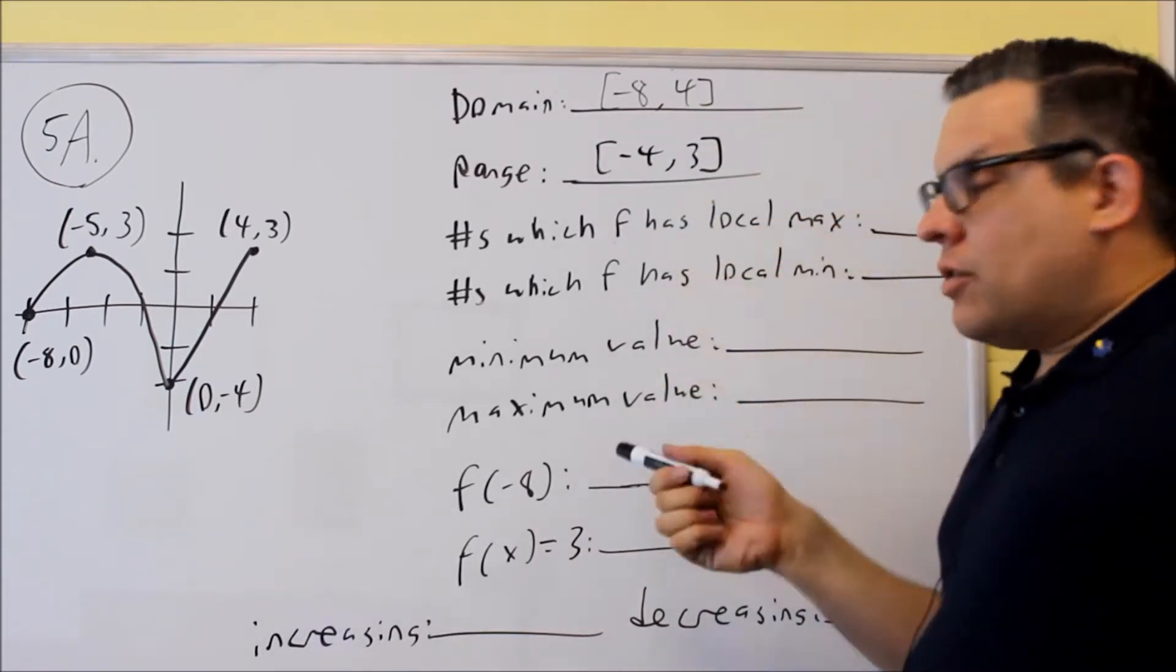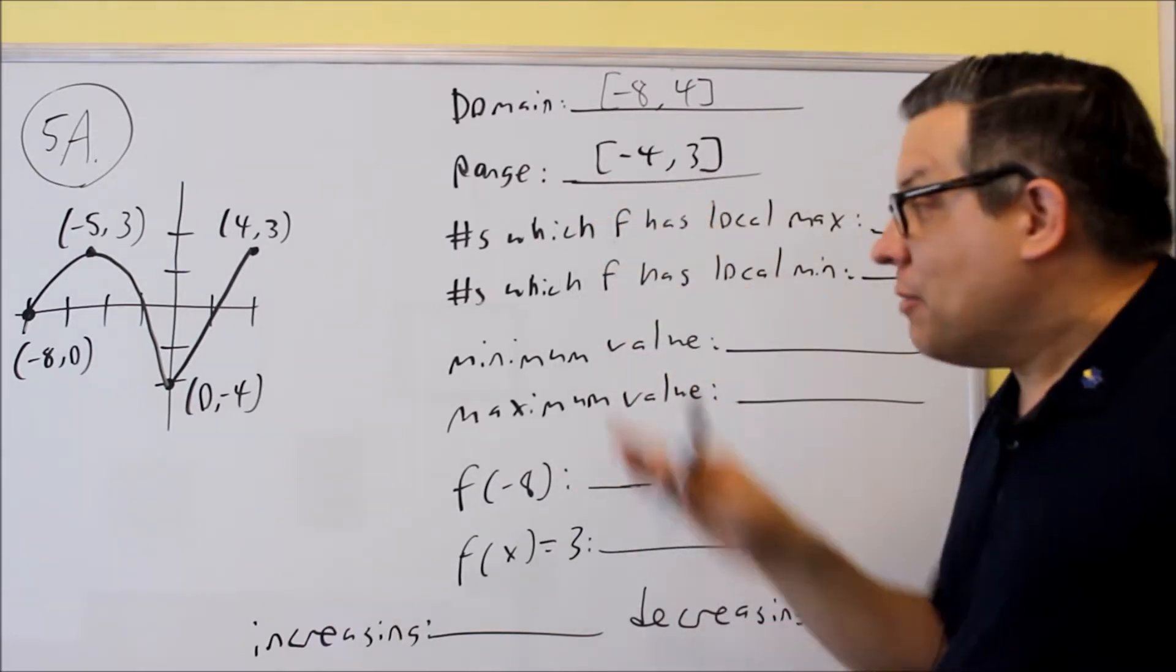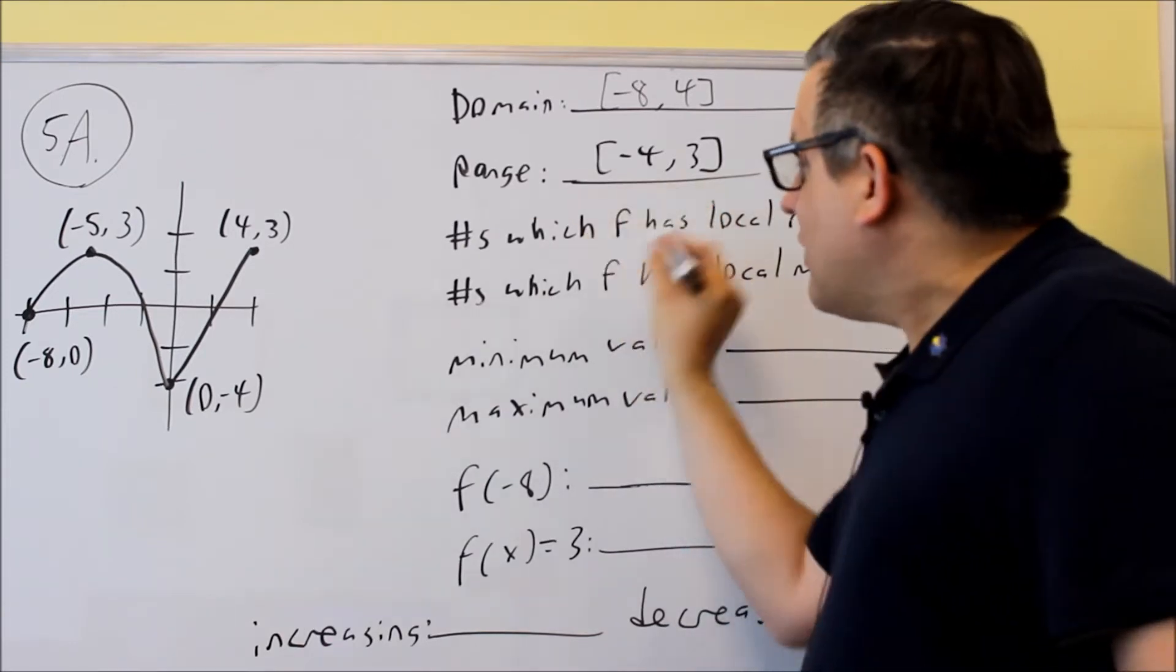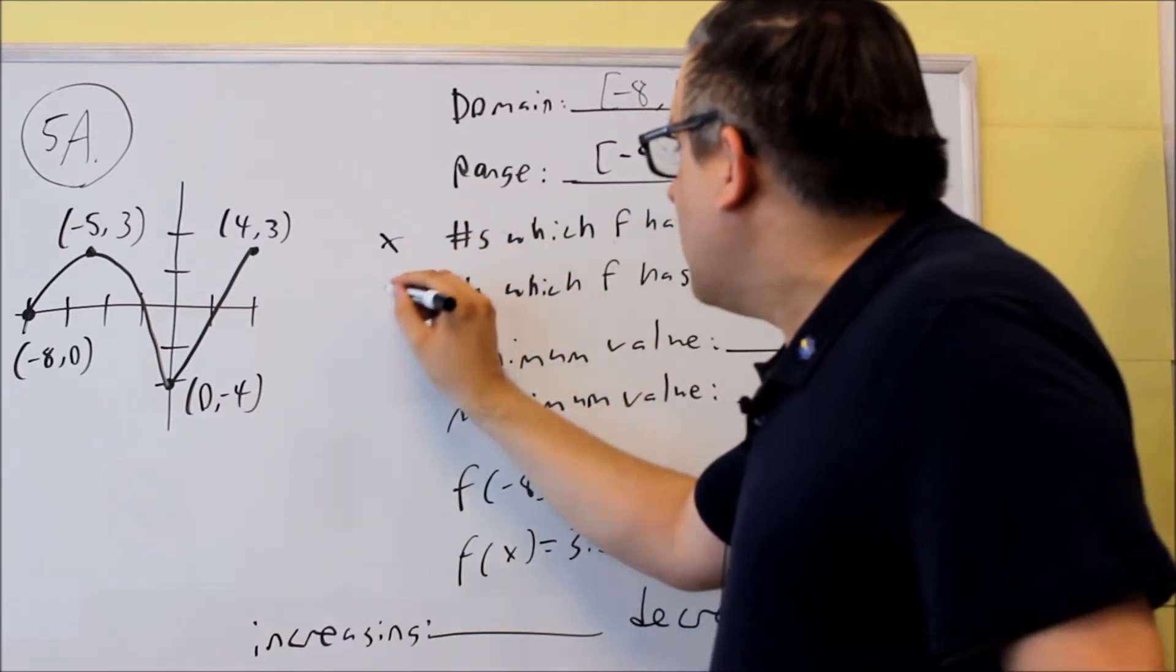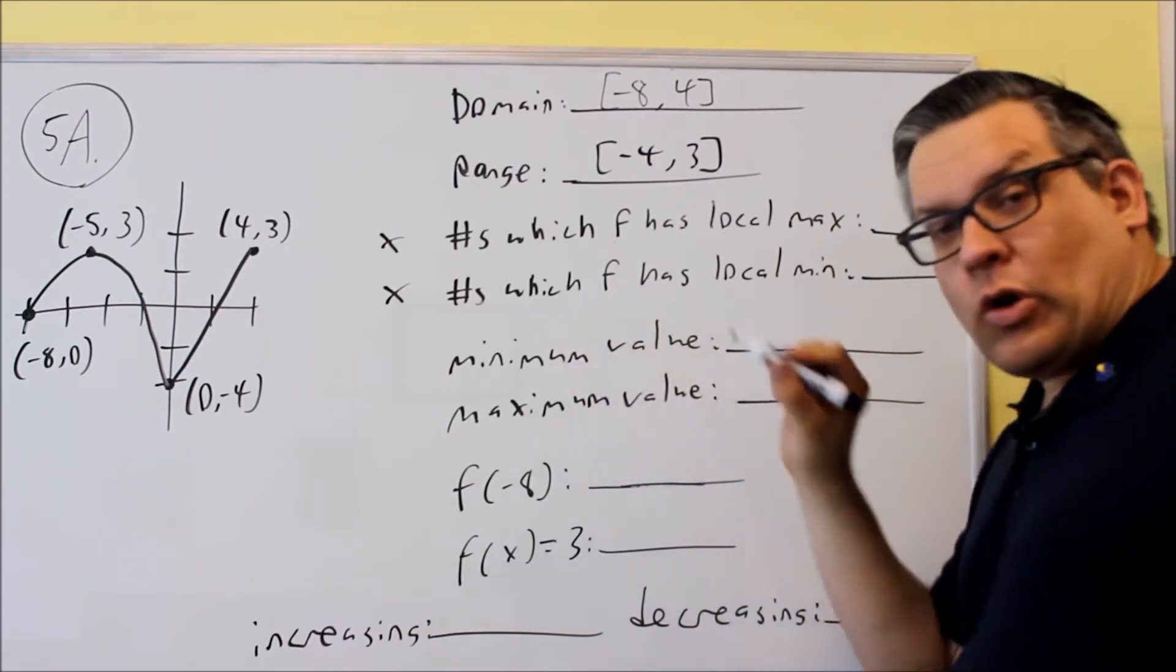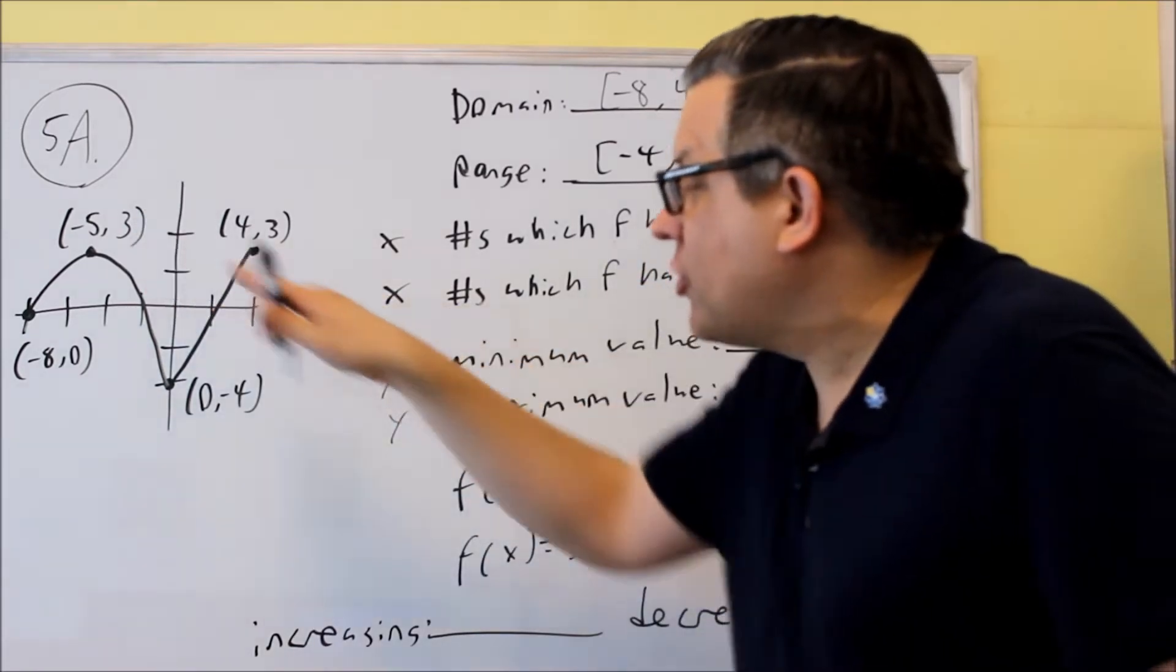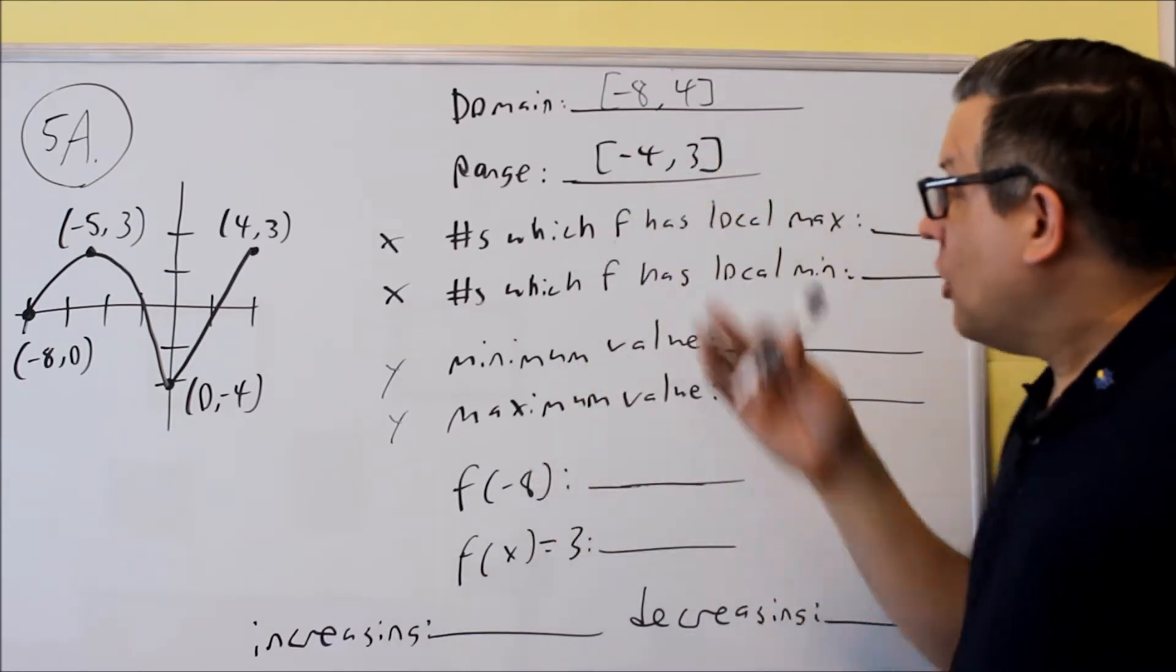Okay, now the wording you have to pay close attention to on the test. It's going to be worded the same way on the test here, and both of these mean something different. If you see the phrase number or numbers at which, that's referring to x values. If you see min or max value with no wording in front of it, that's referring to y values. Even though we're referring to the same point in the graph, they're asking two different things. So be careful about that when you do it.